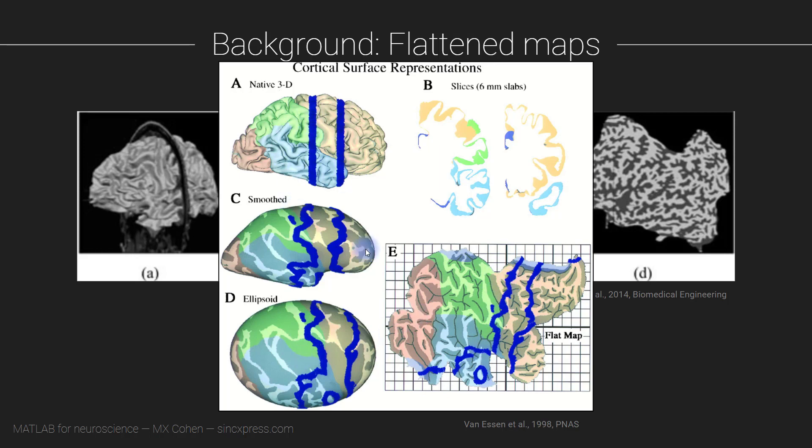Now the data that we will work with in this module are already flattened so we're going to start with images like this. In fact the data set we'll have here doesn't even include the entire brain, it's really only the visual cortex, so we're just going to get this area of the flat map.